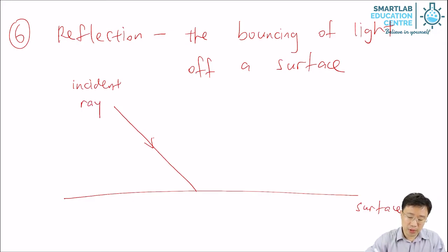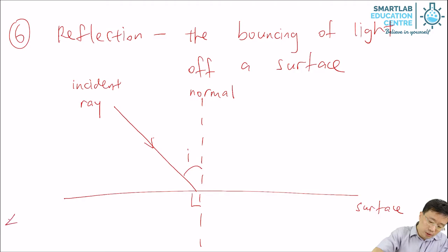When the light hits the surface, we can draw an imaginary line that is perpendicular to the surface. This line, we call it a normal. Between the incident ray and the normal, we can see there is an angle. We call this angle I. This angle I is called the angle of incidence.